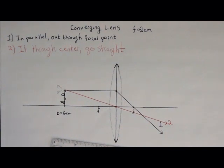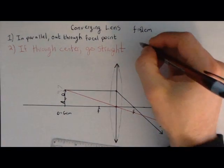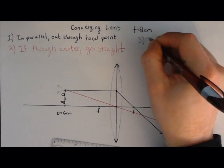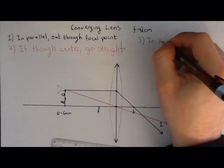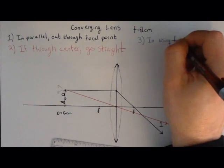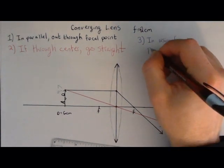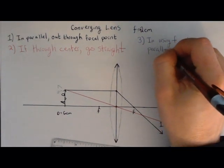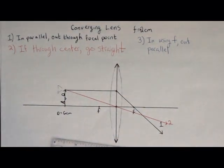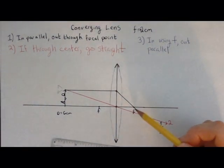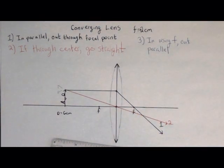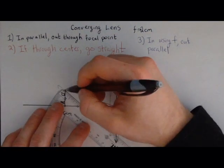Ray number three, remember, is in using focal point, out parallel. Now, in this case, we've already used this focal point. So we're going to come in using the focal point we haven't used yet, which is this one over here on this side. So we're going to pick the ray. Remember, there's an infinite number of them.